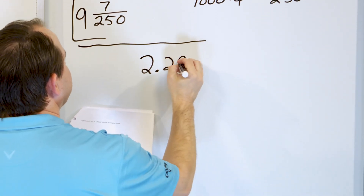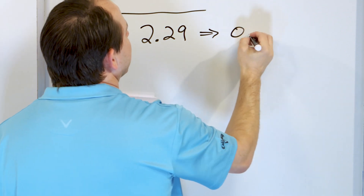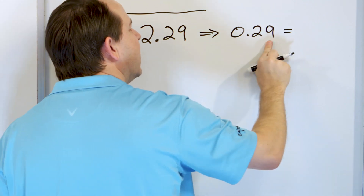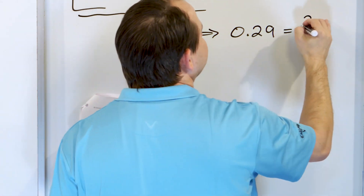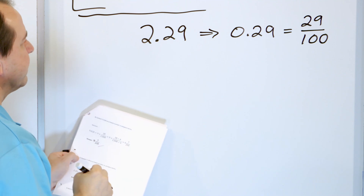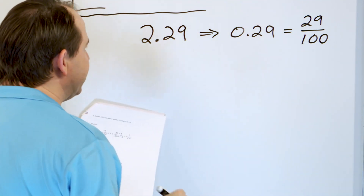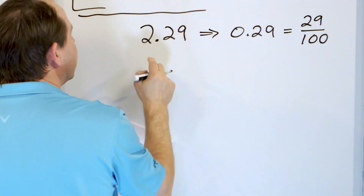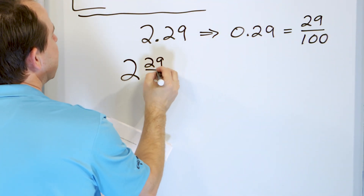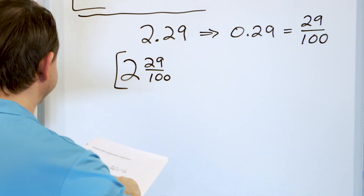Next: 2.29. Let's take 0.29 — it's 29 in the hundredths place, so 29 hundredths. How do we simplify this? Actually, we cannot divide top and bottom by anything, so we just attach it to the 2: 2 and 29 one-hundredths. That's the final answer.